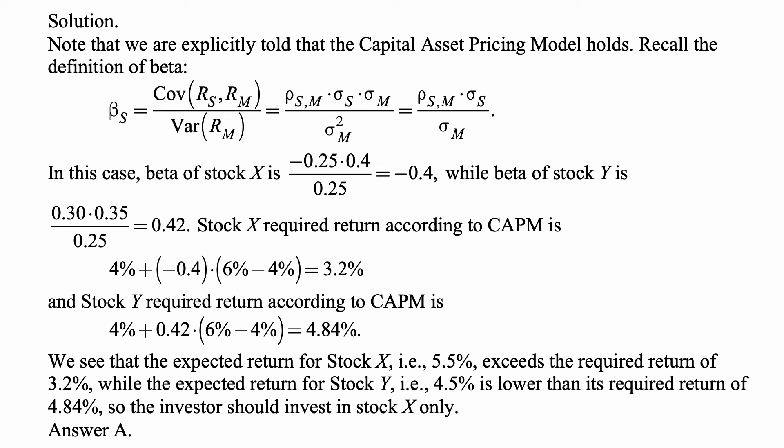The required return for Stock Y, according to CAPM, is 4% plus 0.42 times (6% minus 4%), which equals 4.84%. The expected return for Stock X of 5.5% exceeds its required return of 3.2%, while the expected return for Stock Y of 4.5% is lower than its required return of 4.84%. Therefore, the investor should invest in Stock X only.